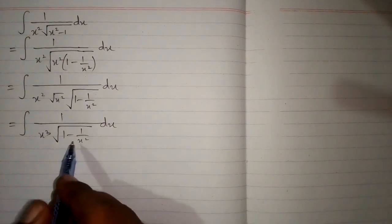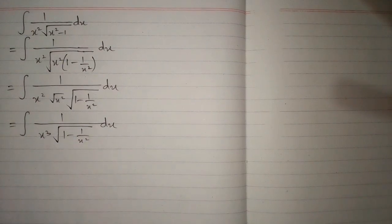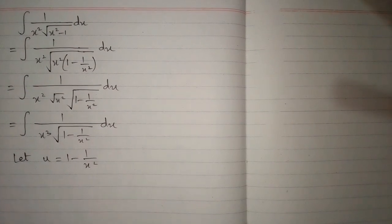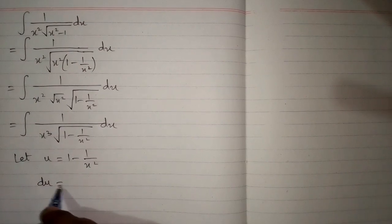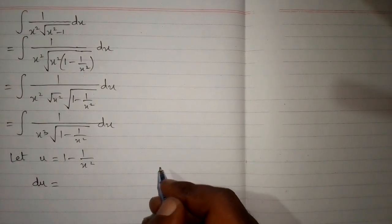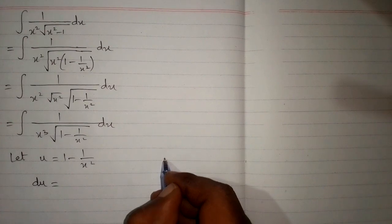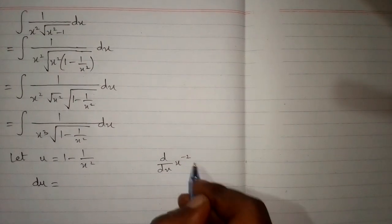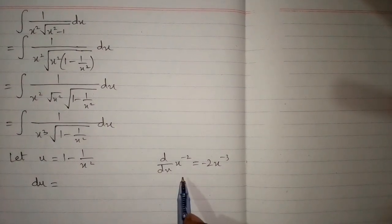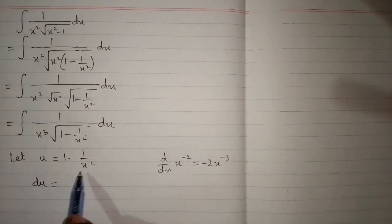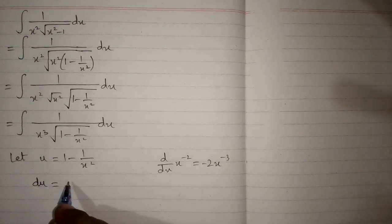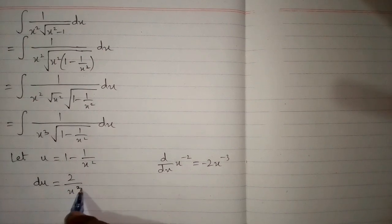Now we suppose that the inside of the square root is u. So let u equal to 1 minus 1 upon x square. We find the differential du by taking the derivative: the derivative of 1 is 0, and the derivative of x to the power minus 2 is minus 2 times x to the power minus 3. Since minus times minus is plus, we have du equal to 2 upon x cube dx.